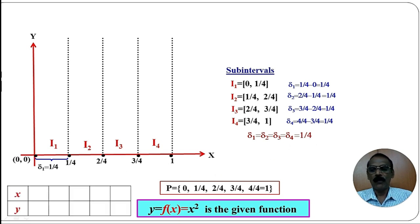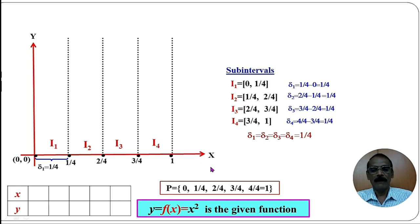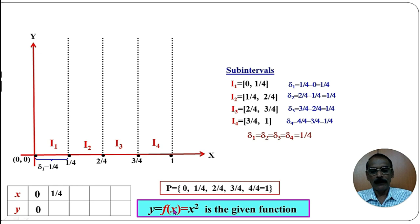Since we are given partition points 0, 1/4, 2/4, 3/4, 1, we need to find the value of f at these points. For the function y = x², when x = 0, f(0) = 0² = 0. The next partition point is 1/4. When x = 1/4, f(1/4) = (1/4)² = 1/16.